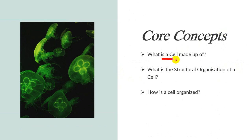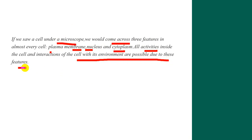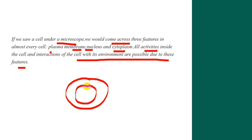Now coming to the core concept: what is a cell made up of? What is the structural organization of the cell and how is the cell organized? If we look under a microscope, we would come across three features in almost every cell. The most important three features are the plasma membrane, nucleus, and cytoplasm. All activities inside the cell and interaction of the cell with its environment are possible due to these features. The outermost covering is the plasma membrane or cell membrane.